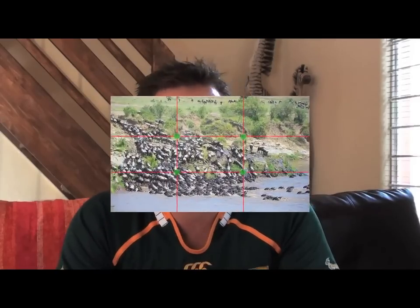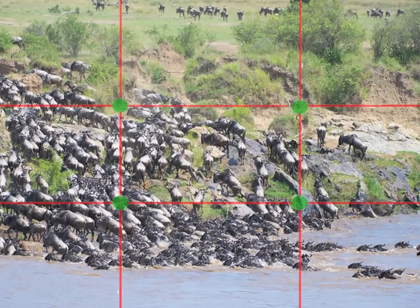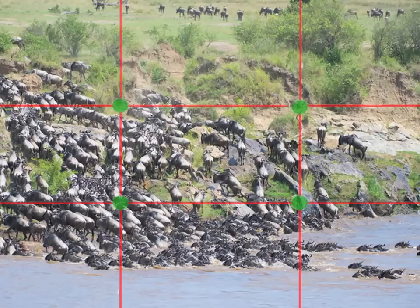You don't always have to have a clearly defined subject on that rule of thirds power point. In this example, there's a bucket load of wildebeest. However, my focal point in all of that chaos is still on one of the rule of thirds. It's where most of them are mixed up together, but it's also where they're going out — so it adds an interest to the image. If I just shot that randomly in the middle of the frame, not as interesting.